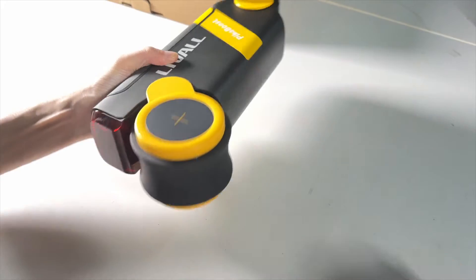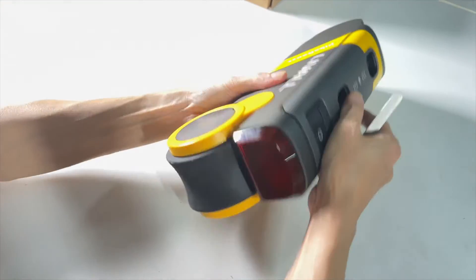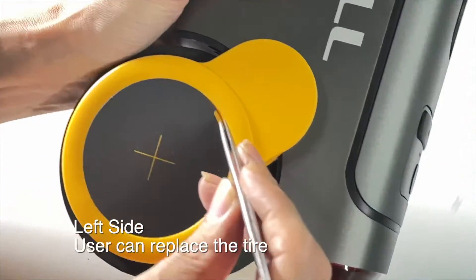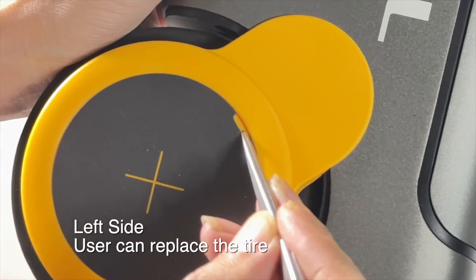The two sides of the tire look very similar, but actually there's a difference. On the left side, we can see a gap here, which is designed for the users to disassemble and replace tires.